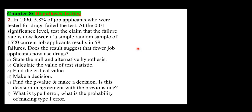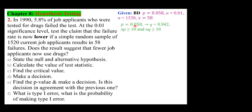Let's write the given. The very first number, 5.8%, is the proportion. The next number, 0.01, is the choice of alpha. The sample size N is 1,520 and X is 58. P is 0.058 and Q is 1 minus P, which equals 0.942.